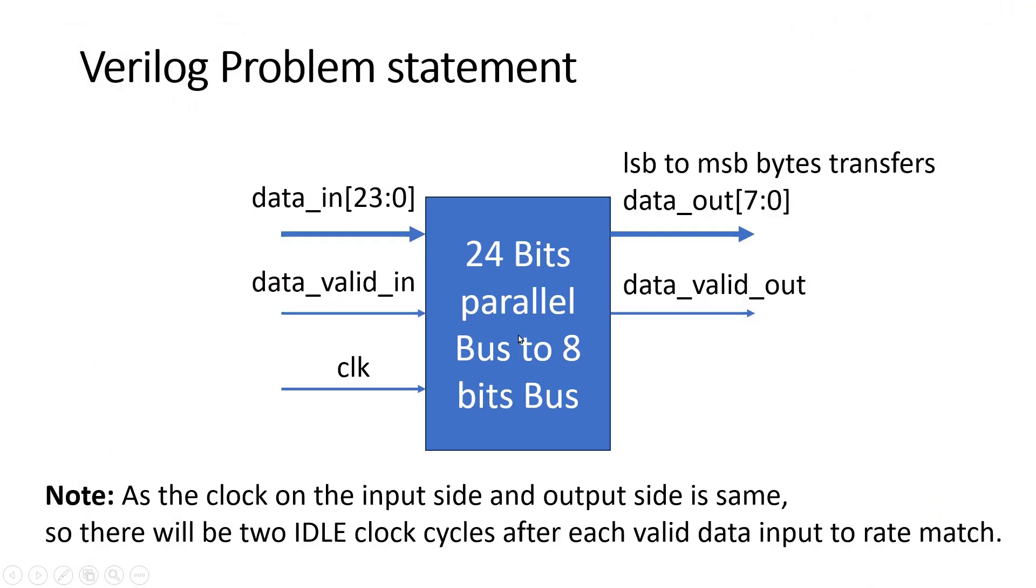Friends, the problem statement is on your screen. Here you have to design this unknown logic. Its input is a data_in bus which is 24 bits long or 3 bytes long. It has another signal which is one bit long, called data_valid_in, and this is the clock signal where both input side and output side are working.